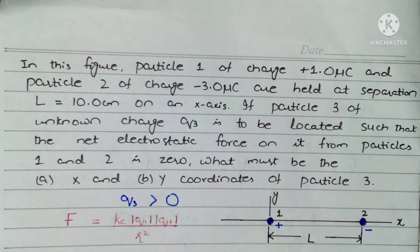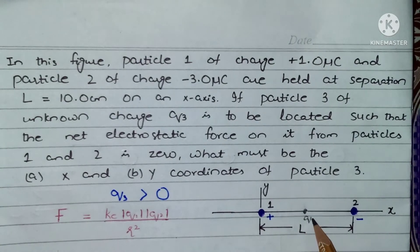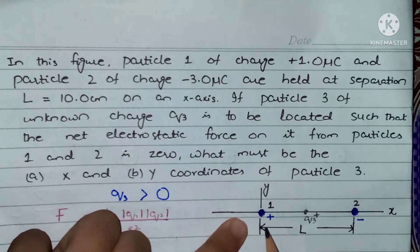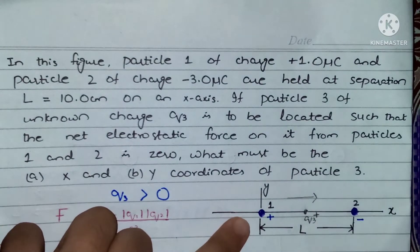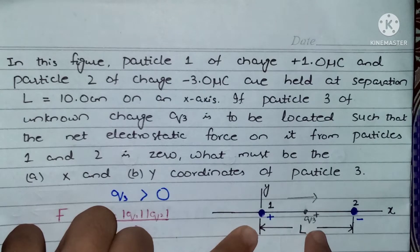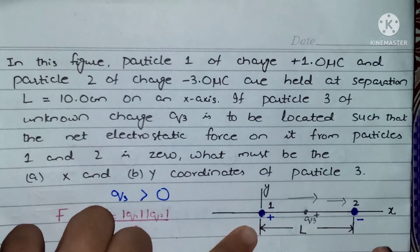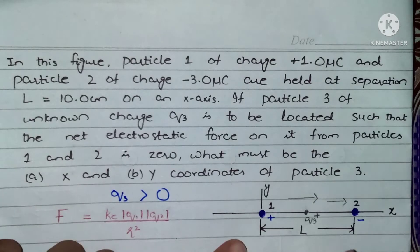Now the second task is to locate its position. Let's first consider a point between the two charges where we place q3. If q3 is positively charged, charge 1 is also positive so it repels q3 — the force points away from charge 1. Charge 2 is negative so it attracts q3 toward itself. Both forces point in the same direction, so they cannot cancel each other. Therefore, we cannot locate q3 between the charges.